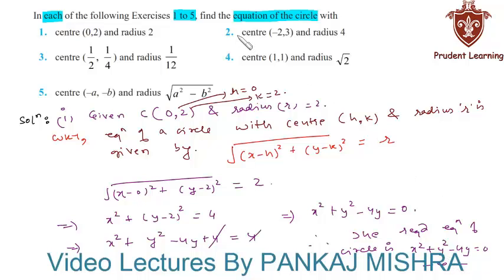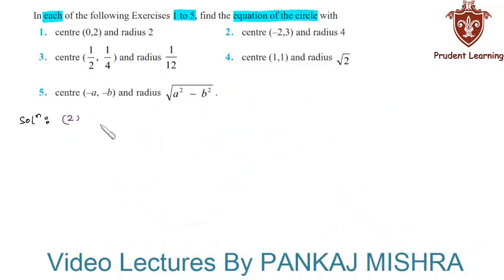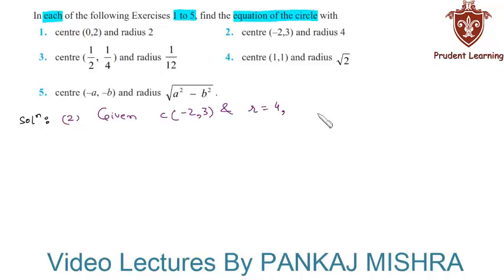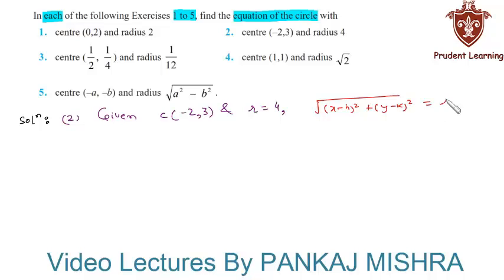In the second question, we are given that coordinates of center are minus 2 comma 3 and radius of the circle is 4. We know that the equation of a circle with center h comma k and radius r is given by the square root of (x minus h) whole square plus (y minus k) whole square equal to r. So here we have h equal to minus 2 and k equal to 3.